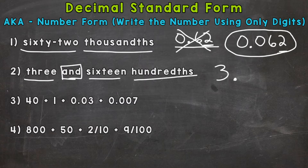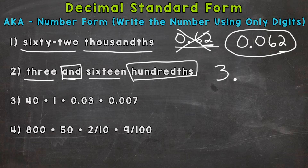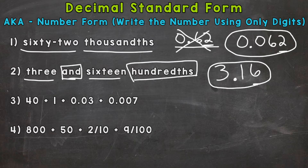So three, decimal, 16 hundredths. The first name is 16, so we write that number as is. Now that 16 needs to end in the hundredths place, because that's the last name of the decimal portion. So 16 hundredths — a 16 that needs to end in the hundredths place. And that works: our 16 ends in the hundredths. This would be correct and match our word form of three and 16 hundredths: 3.16.